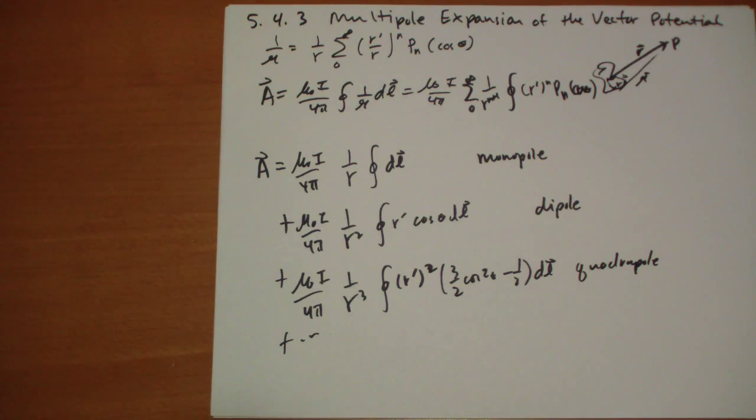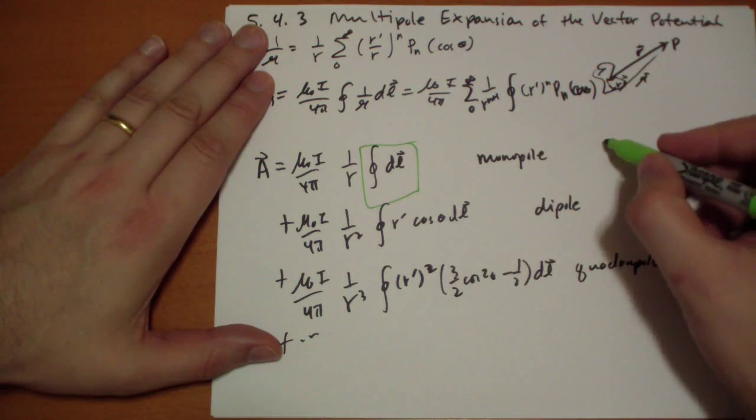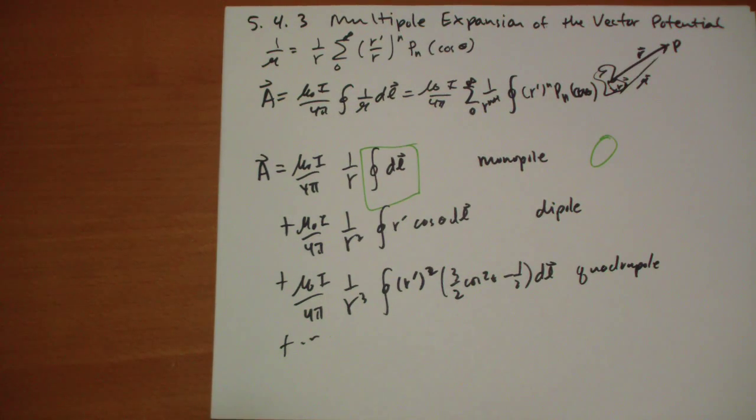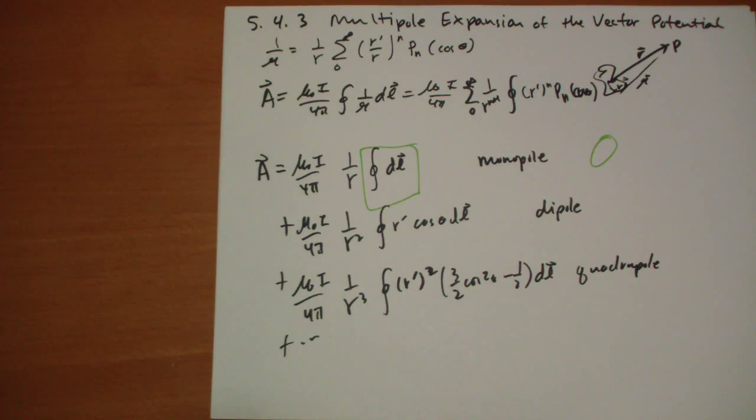Now, the interesting fact is that the monopole term, because there are no monopoles, is 0. Okay, the monopole term is 0. So the integral over some loop, you basically, if you add up all the vectors as you go around this loop, the sum is going to be 0. So anyway, the most dominant term is the dipole.